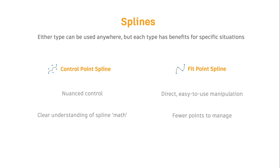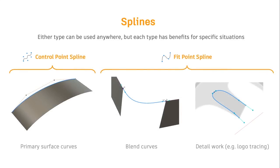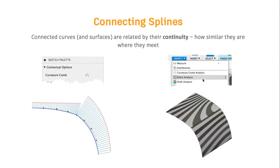Those are the two splines we have in Fusion. It's often a case of personal preference which one you use for given situations. Control point splines give you more nuanced control over the shape and a cleaner understanding of the math behind it. Fit point splines give you less accurate control in that sense, but they're easier to use because the points are directly on the spline — a more intuitive way to describe shapes.